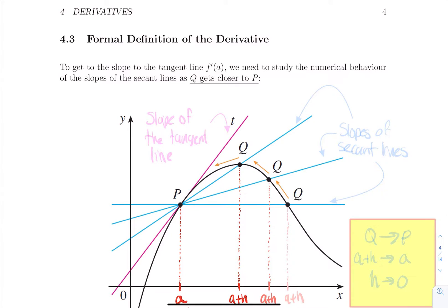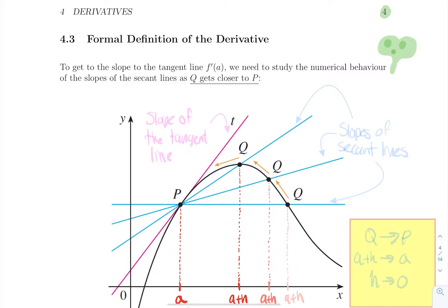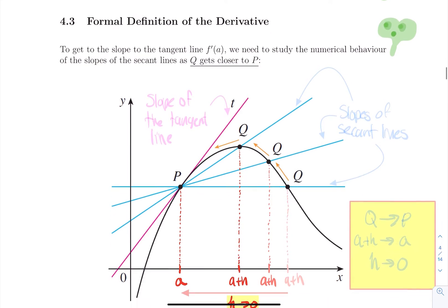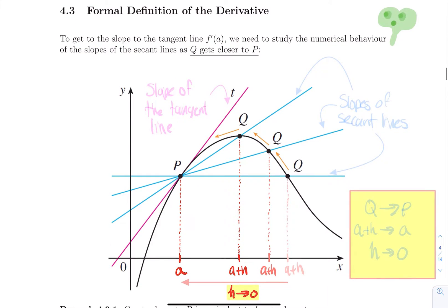Hello everyone. It is now time to go through the formal definition of the derivative. We want to make this both a definition and a computation. We will learn how to compute the derivative of a function f of x at the point x equal a. The goal is to get to the slope of the tangent line — to compute f prime at a.